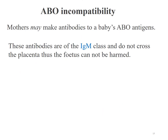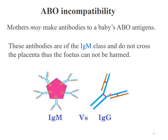Regarding ABO blood group incompatibility for pregnant women: the mother may make antibodies towards the baby's ABO antigens, but these antibodies are of the IgM class and do not cross the placenta, so the fetus is protected from such harm. The key difference is that for rhesus factor the antibody is IgG, whereas for ABO it is IgM. IgM is a pentamer containing 5 antibody units, and because of its large size, it cannot cross the placenta and therefore creates no harm against the baby.